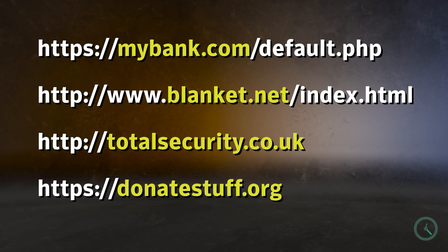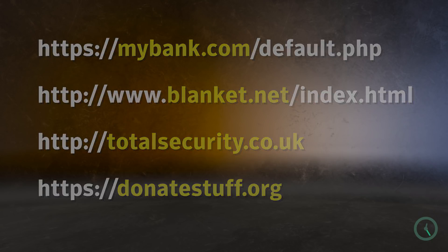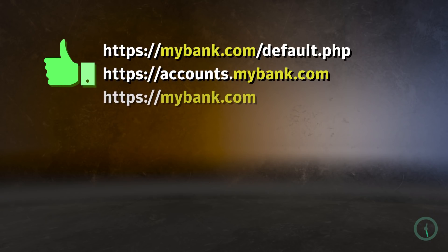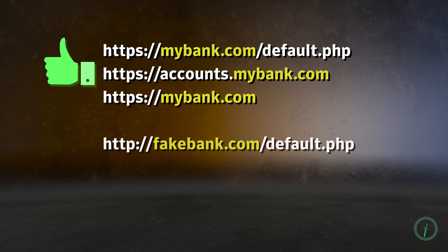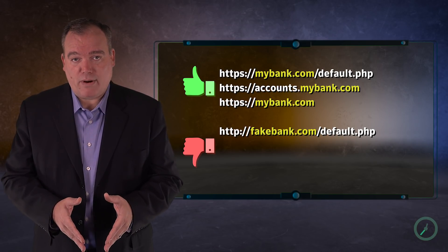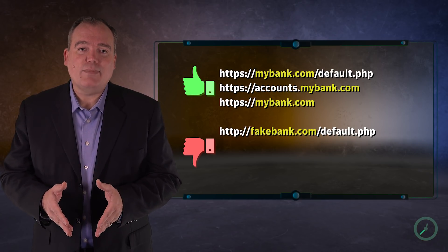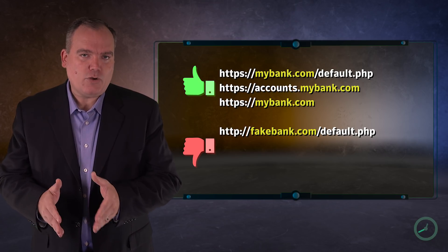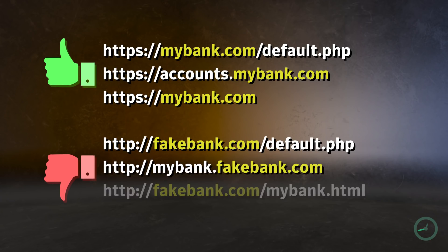A good domain is something you are familiar with, like mybank.com. A bad domain is a domain you aren't expecting to go to, like fakebank.com. The bad guys will often try to disguise a phony URL by adding information you expect somewhere near the domain, like mybank.fakebank.com.